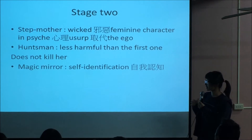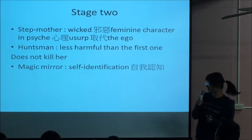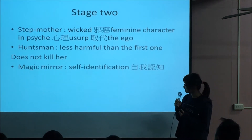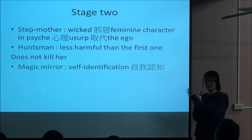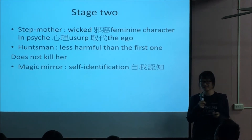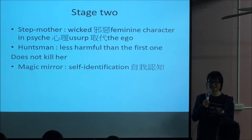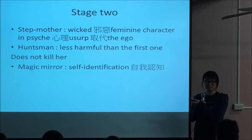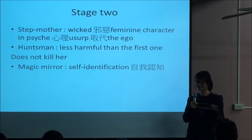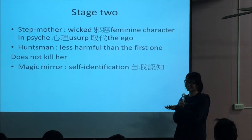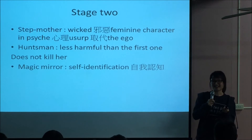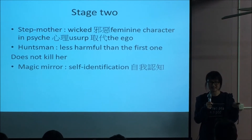The magic mirror represents self-identification. The evil queen always asks the mirror, so she depends her self-identification on the mirror's answers.